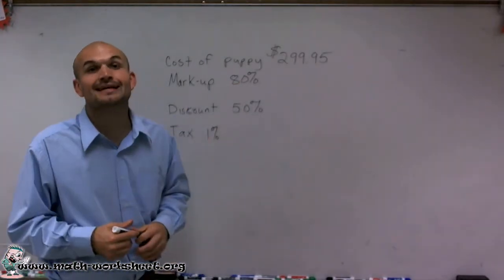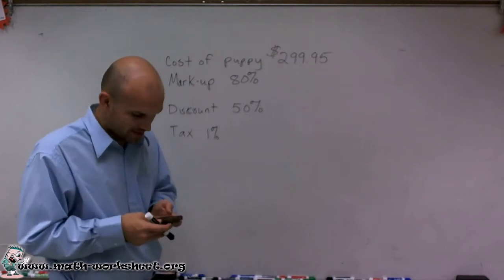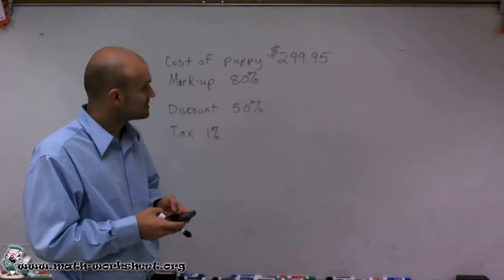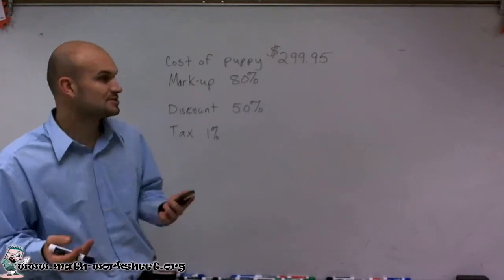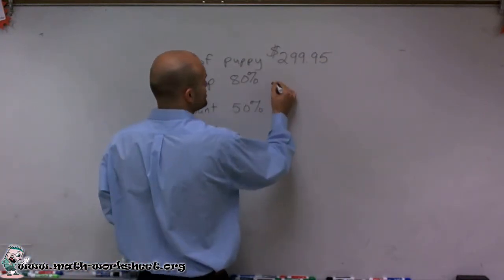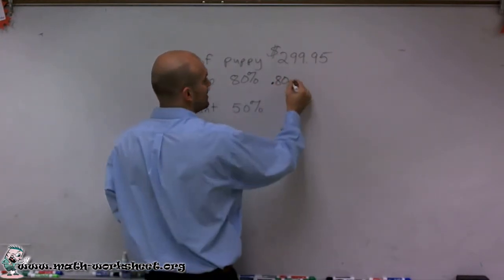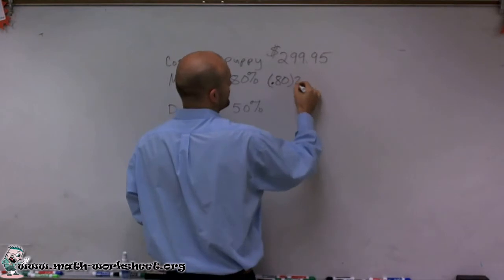So let's say we're going to have an 80% increase in the puppy's price. We're going to mark it up. So to find out what the new price is going to be, rather than doing proportions, I'm just going to take our markup price, rewrite it as a decimal, and multiply it by our original price. Now this is going to be the amount that we're going to mark up.